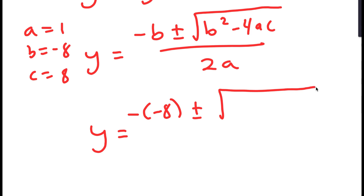I'm going to divide both terms by 2 since they're both divisible by 2, so I get 4 plus or minus 2 root 2. So now I have two solutions: y equals 4 plus 2 root 2, and y equals 4 minus 2 root 2.